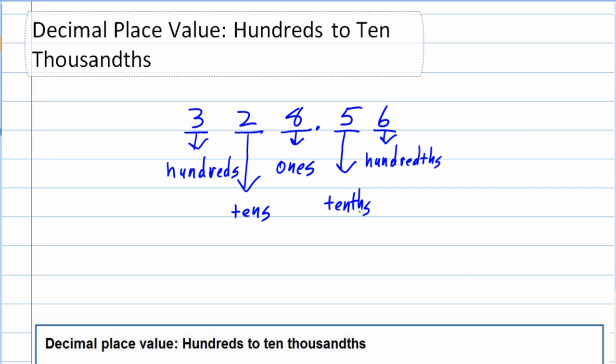Decimal place value: hundreds to ten thousands. Earlier we looked at decimal place values tens to hundreds, and we referred back to money.